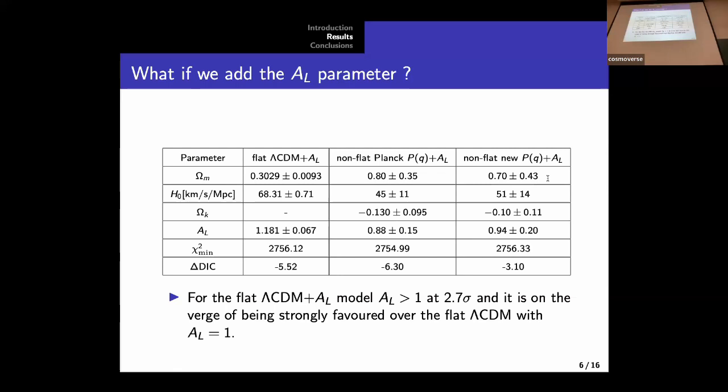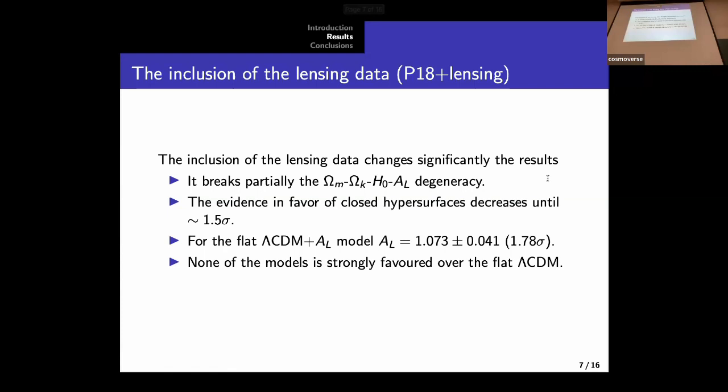What about the non-flat models? Well, as expected, if we introduce an extra degree of freedom, the geometrical degeneracy gets even worse. Of course, we obtained very high value for the omega-matter and the H-naught. But they are also favored with respect to the flat model.